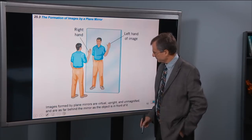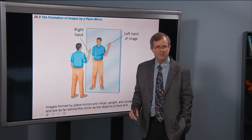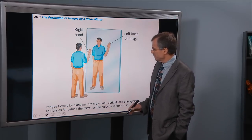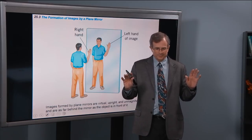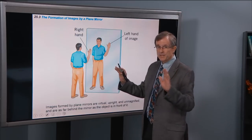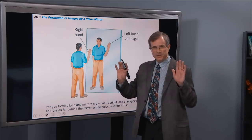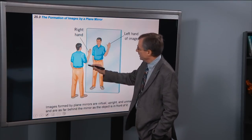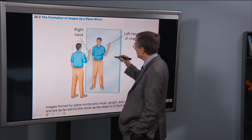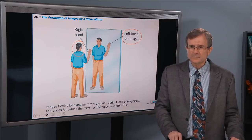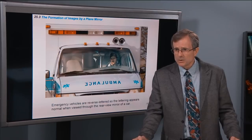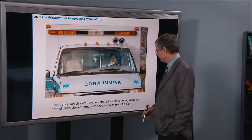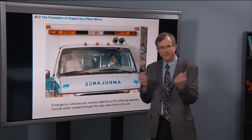Images are also left-right reversed. There's a great YouTube video on that in my playlist for this chapter — chapter 25 — by Physics Girl: an excellent description of why images are left-right reversed. If I'm presenting myself to you and then turn around to look in a mirror, I've actually done that left-right reversal, so my right hand becomes my left hand. Emergency vehicles take advantage of this by using reverse lettering, so that the lettering appears normal when viewed through a rear-view mirror.